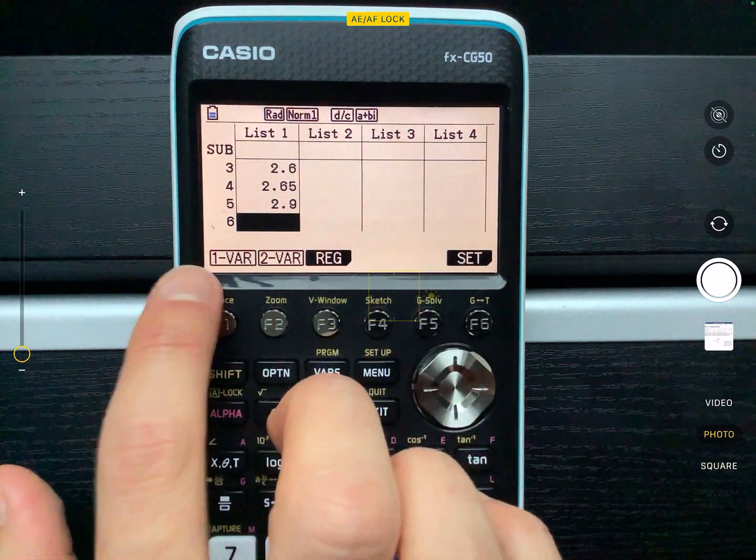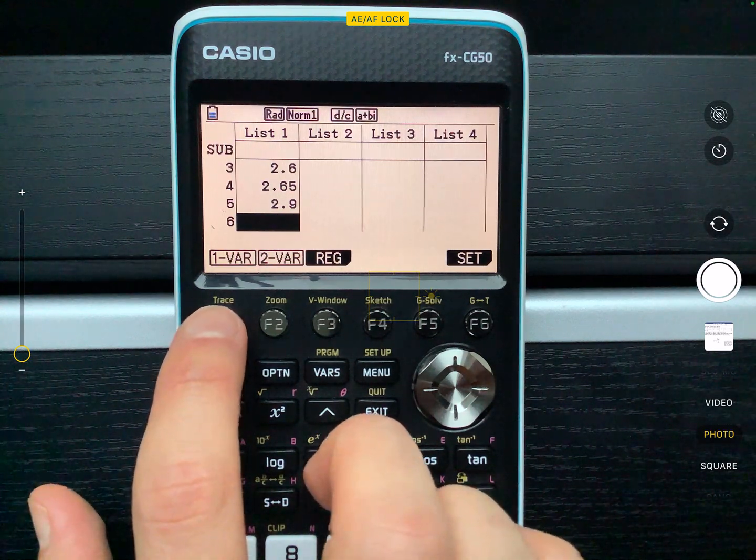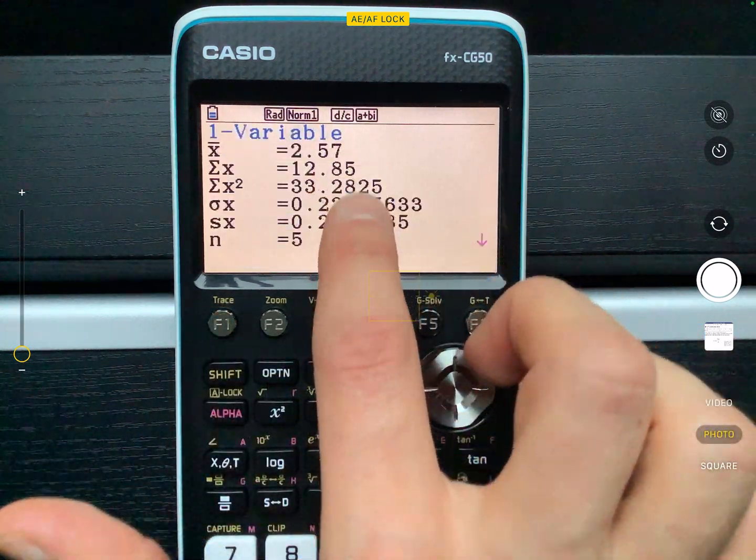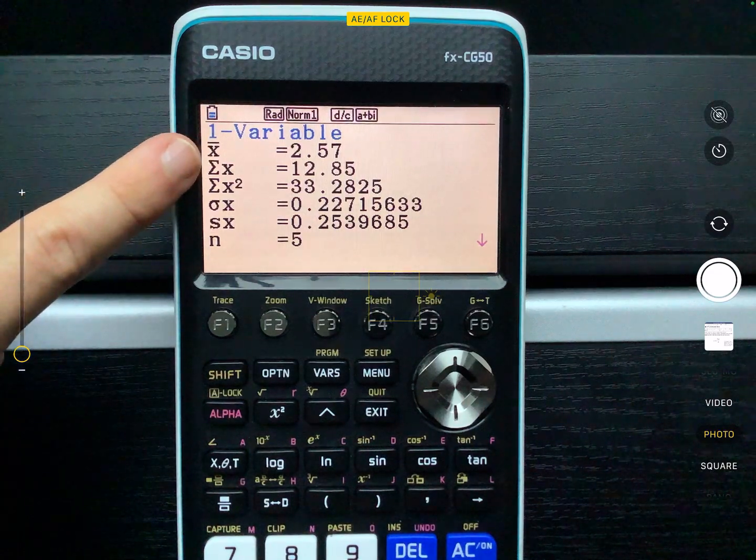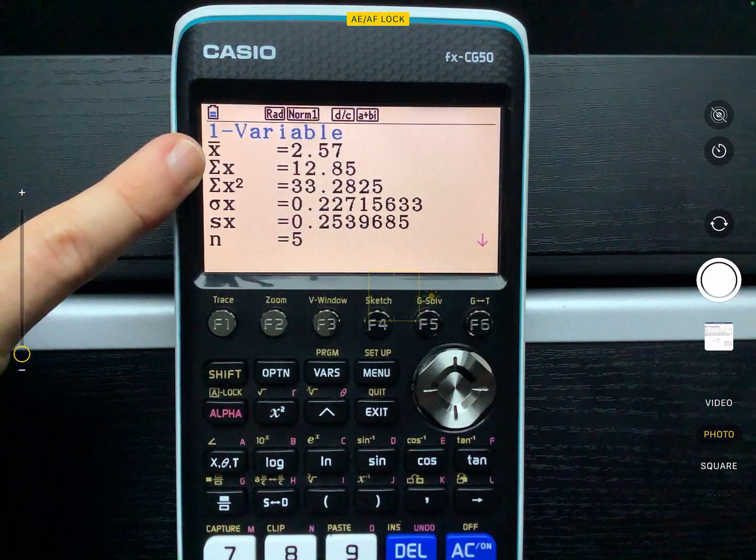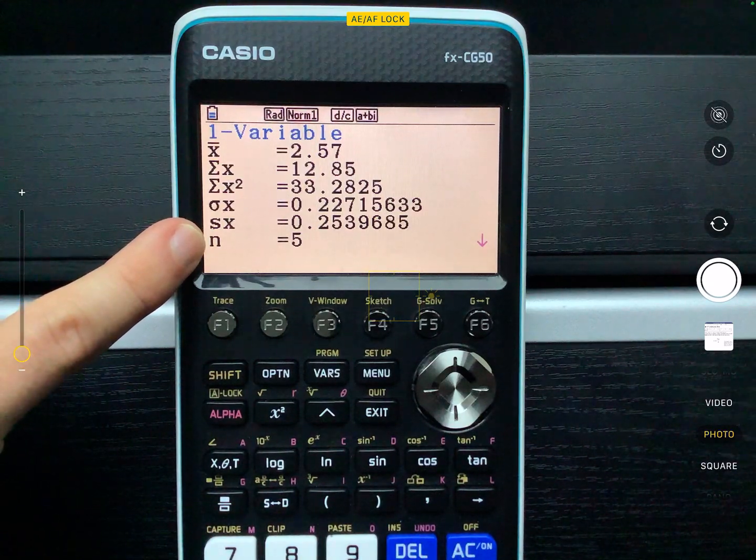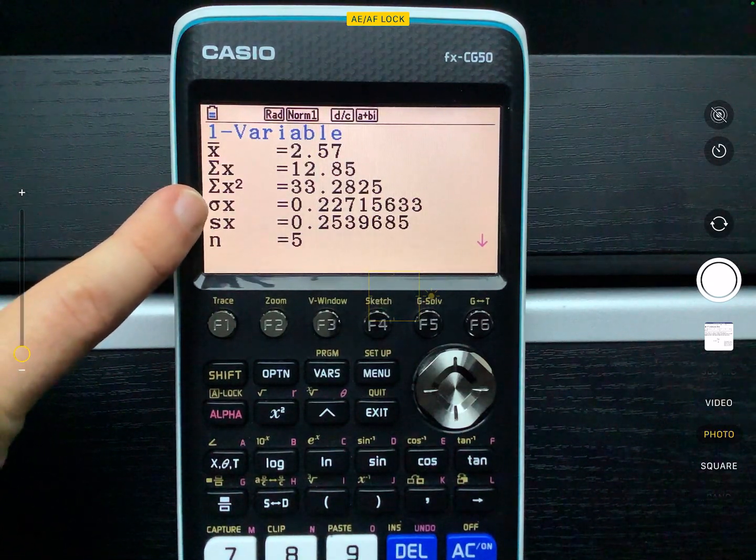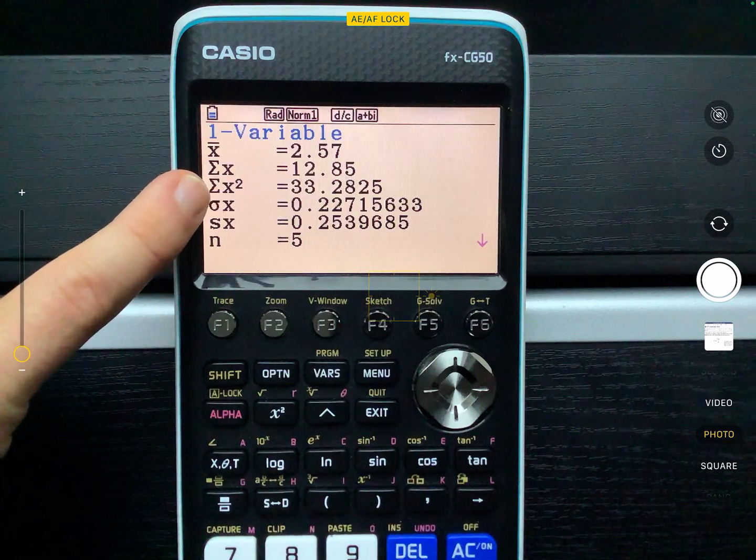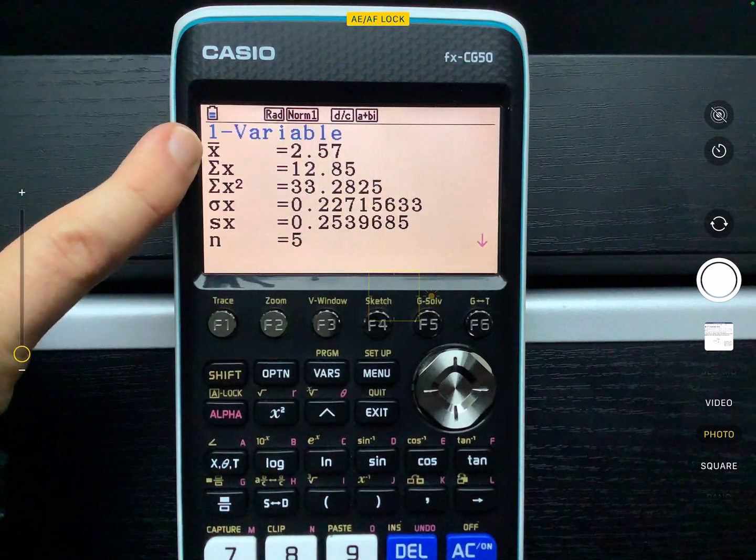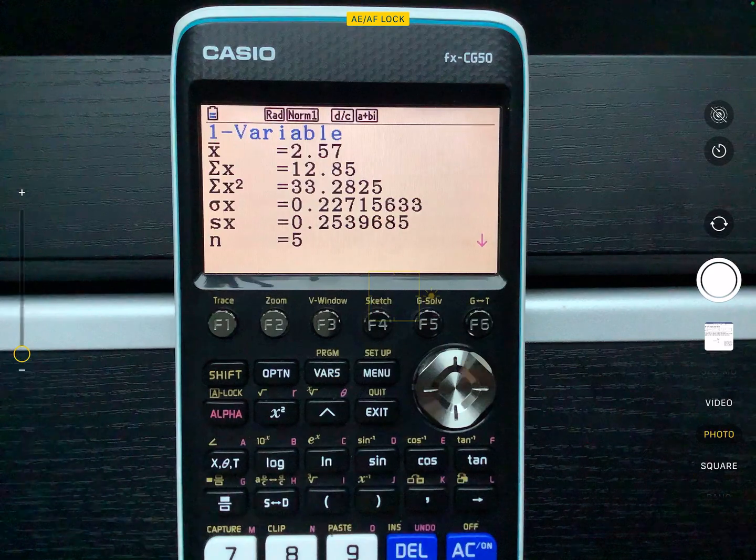Now that I've got to this stage here, I'm going to press one variable to do some one variable calculations. And it tells me all of these different things. It tells me the sum of X is 12.85, and it tells me that there are five values, which is N. Don't worry about SX and sigma X and the sum of X squared just yet. And it also tells us that the mean value is 2.57.